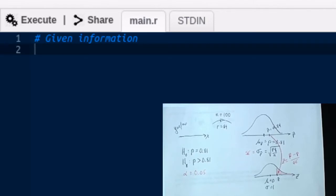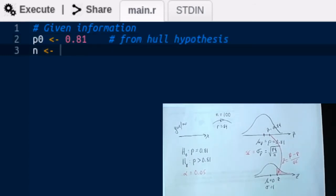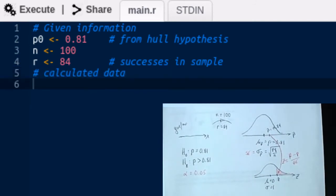So let's begin our script by entering the given information. Now of course these hashtag comments you don't need to put in your script. I'm just putting them there to remind me of what's happening and to help you see what I'm looking at. So we were given the null hypothesis. So in other words we know what P is. I'm going to call that P0 to remind me that it's coming from the null hypothesis. We were also given the sample size, which is 100. We were given that the number of successes in the sample was 84. From that given information we're going to calculate some data. P hat is R divided by N.